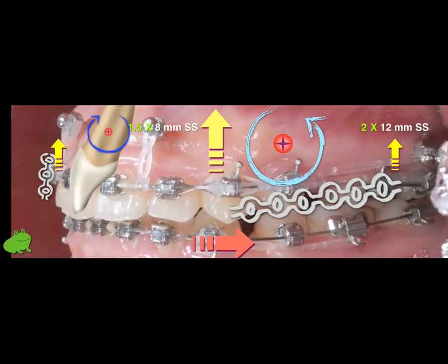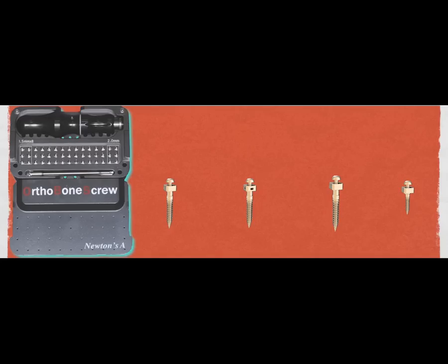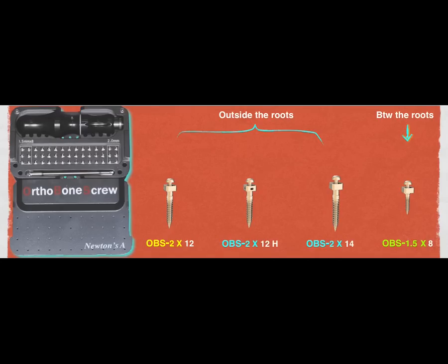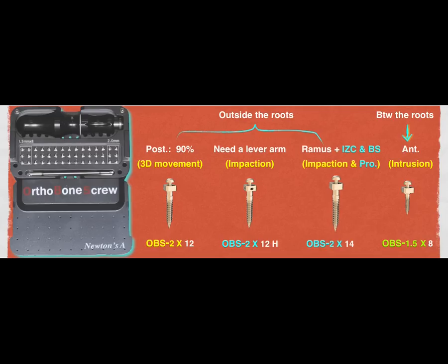So it will end up like this. That is the orthodontic mechanic to correct the gummy smile. The screws I use — I only use four kinds, divided into two categories. One is outside the root, one is between the root. For the upper anterior, I use between the root: 1.5 by 8. The rest I use outside the root — the big screw. Ninety percent of the time I use this screw. Only very few impacted teeth require the other one. For protrusion or gummy smile, I use 2 by 14.